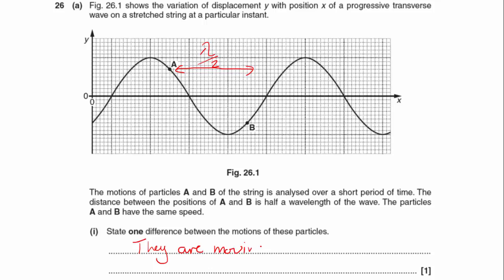One will be going up, one will be going down. We can't tell from the diagram which way they're going because we don't know which way the wave is moving, but they are moving in opposite directions.